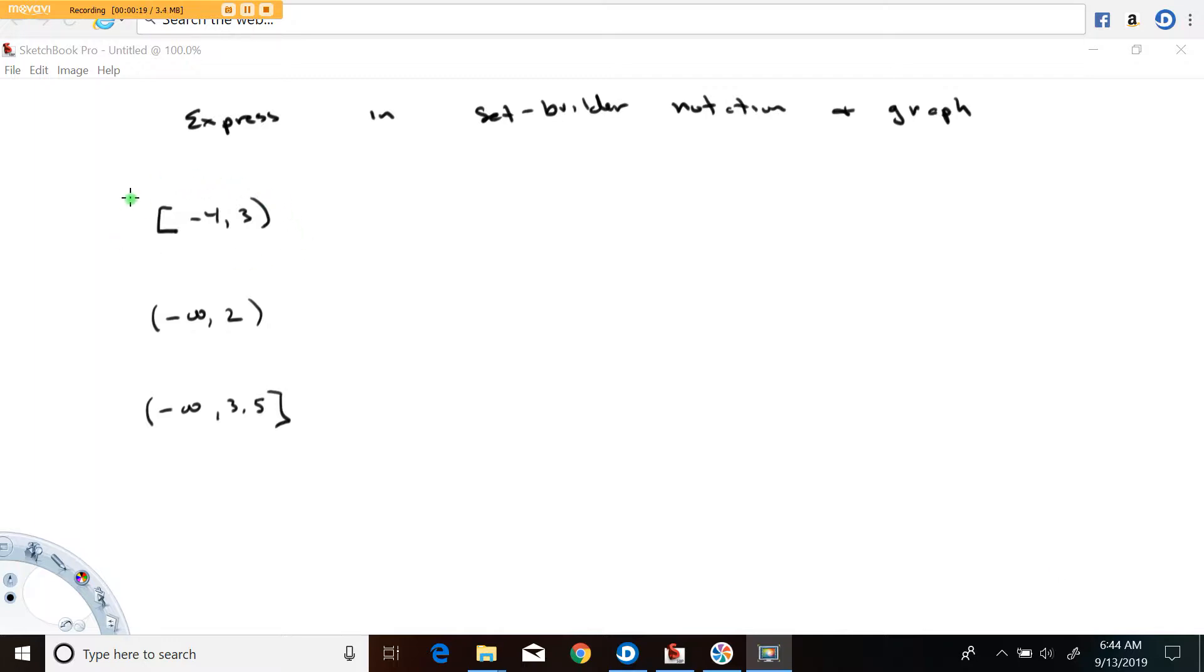Let me start this first one here. This is the set of numbers between negative 4 and 3 and you notice these brackets here. This one's what I call a hard bracket and this one's what I call a soft bracket. The hard bracket like this means including the negative 4. The soft bracket means not including the 3.